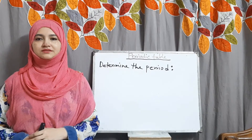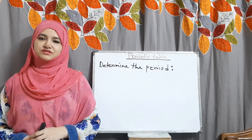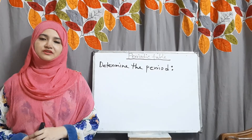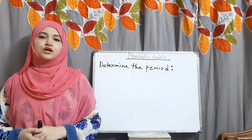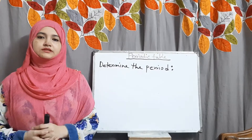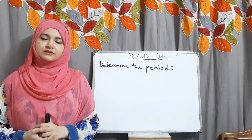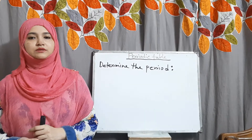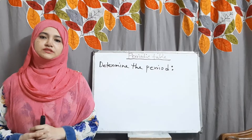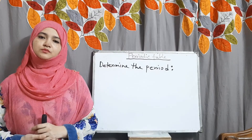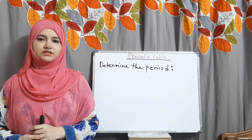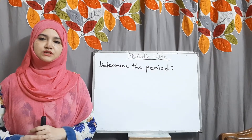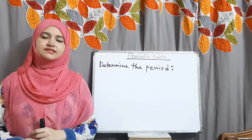Assalamu alaikum students. Welcome to our online chemistry class of Cosmo School. Hope all of you are fine by the grace of Almighty Allah. This is our third class on the periodic table. Today we will learn how the position of any element in the periodic table can be determined by using electronic configuration, which is a very important question for your CQ and MCQ for your SSC exam.